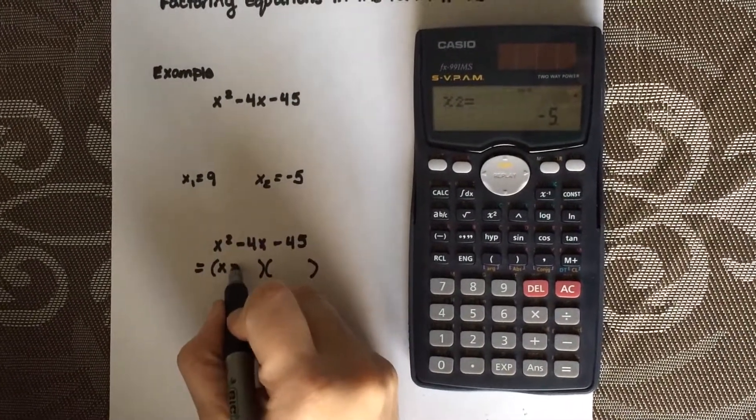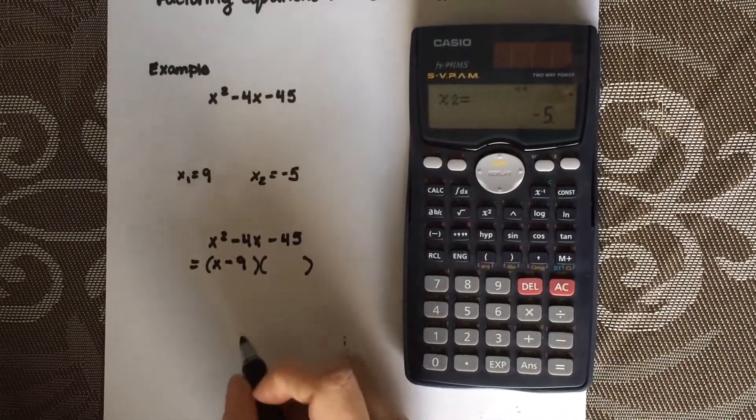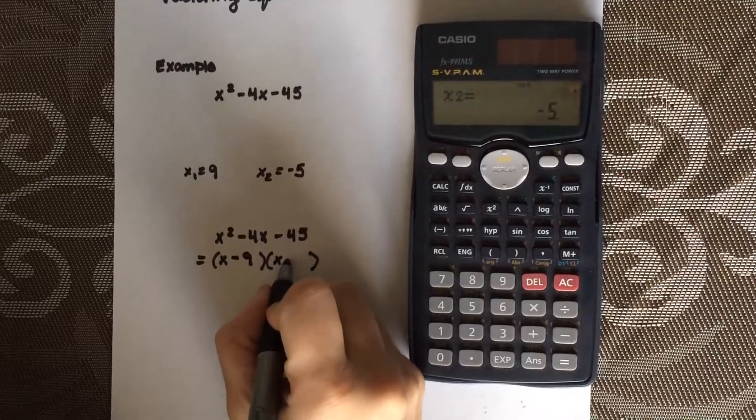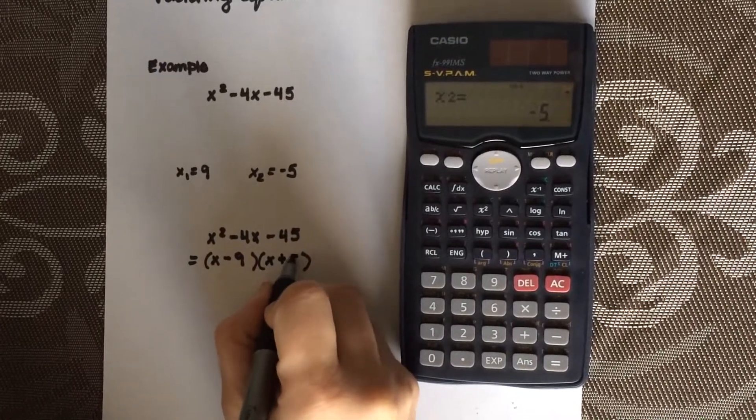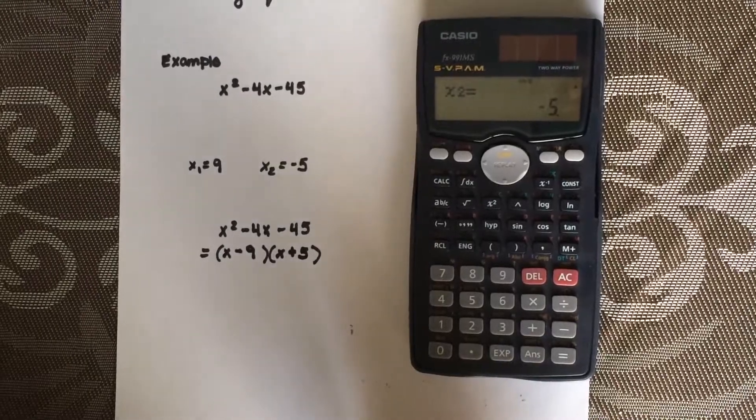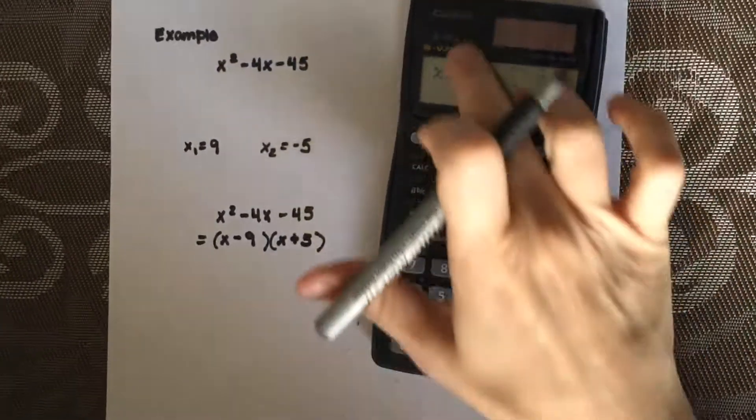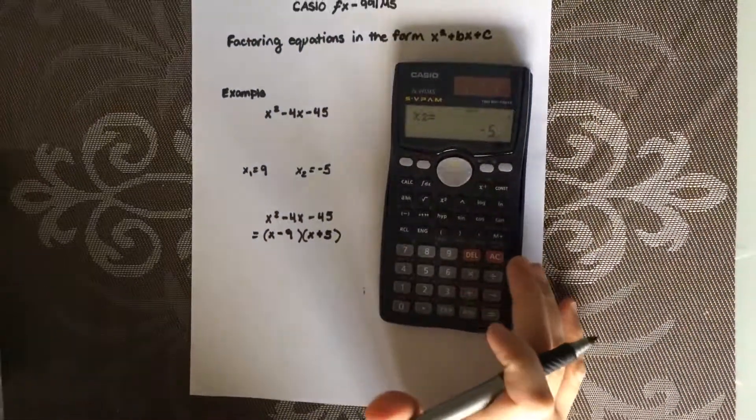Since it's positive 9 here, it's going to become negative 9 here. And since it's a negative 5 here, it's going to become positive 5. There. And there you go. You just factored x squared minus 4x minus 45 using the Casio FX-991MS.